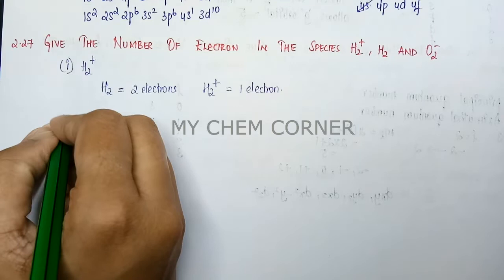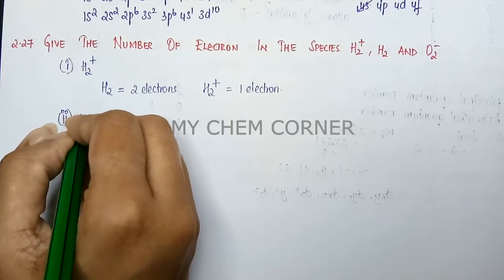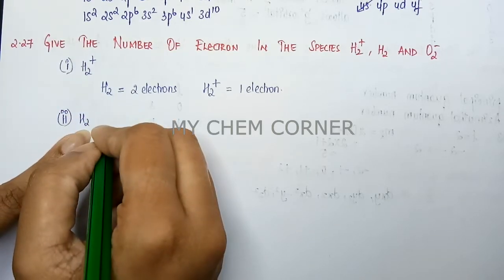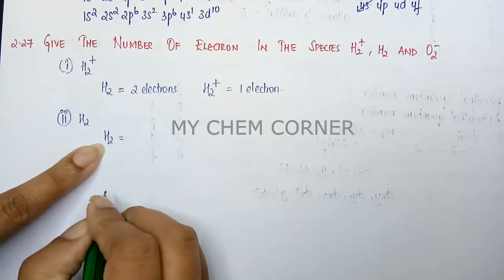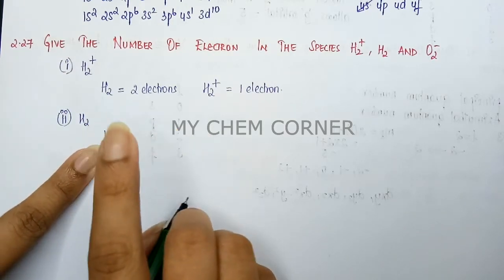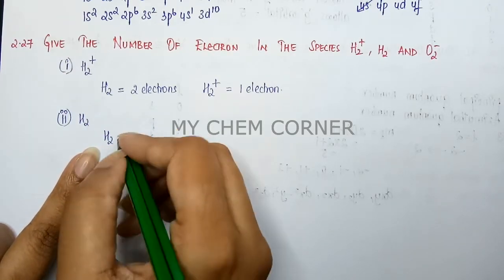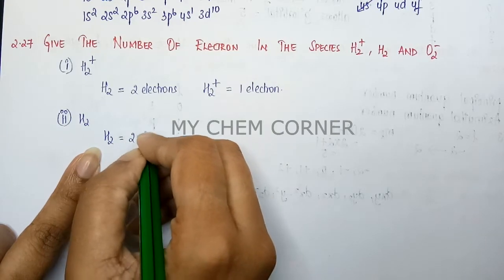The next molecule is H2. H2 by itself is a hydrogen molecule. Each hydrogen atom has one electron. There are two hydrogen atoms, so this is going to be two electrons.